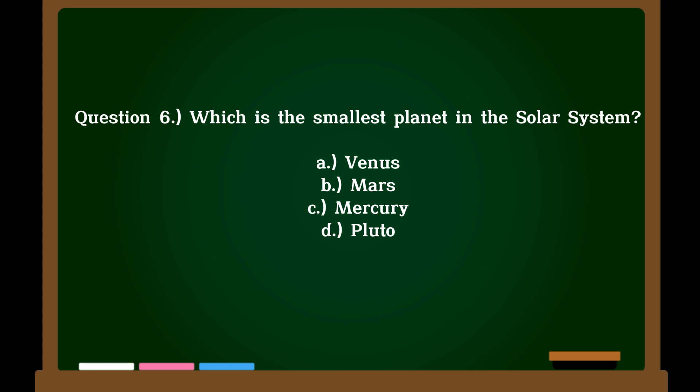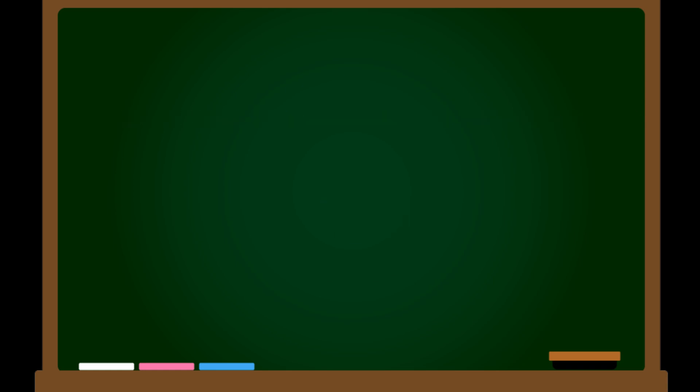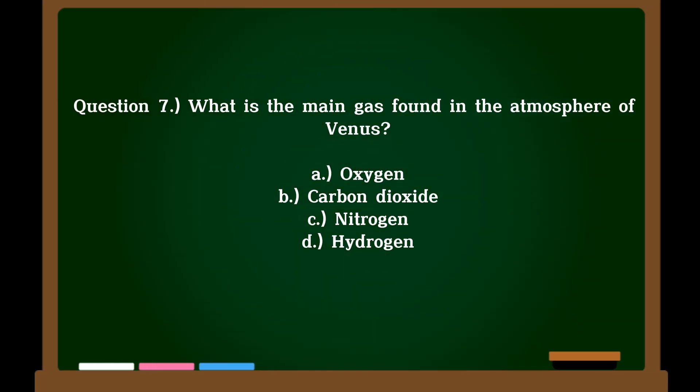Question 6. Which is the smallest planet in the solar system? A. Venus, B. Mars, C. Mercury, D. Pluto. Correct answer: C. Mercury.